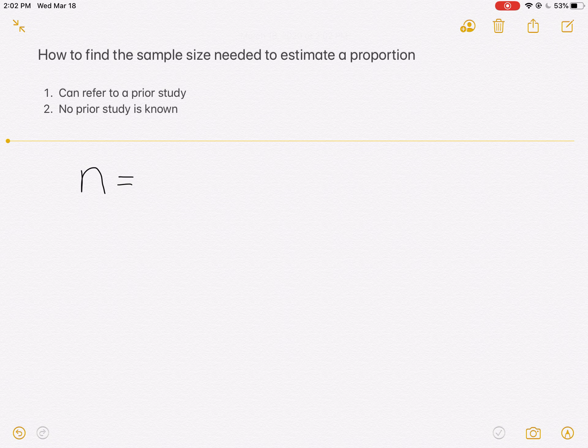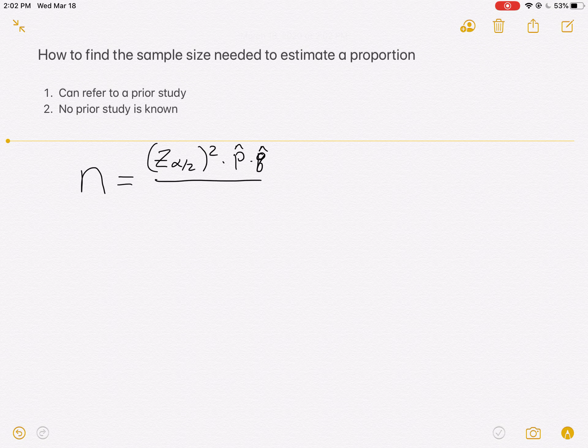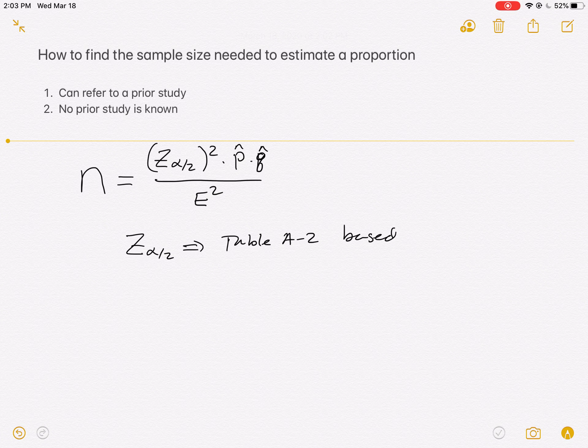The formula that we're going to use looks like this. It's a z alpha over 2. It's squared. And that's being multiplied by p hat times q hat all over the E squared. So that E does stand for error. In the problem there will be a desired error as well. Z alpha over 2 is going to be given by the table A-2 and is based upon a stated confidence level.